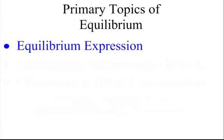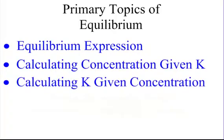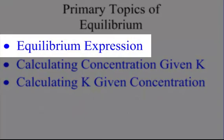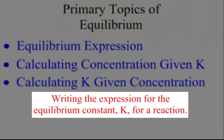Primary Topics of Equilibrium comes down to three different things: the equilibrium expression, calculating concentration given K, and calculating K given concentration. In Part 1, we're going to take a look at just the equilibrium expression. We're going to find out how to write the expression for the equilibrium constant K for a reaction.